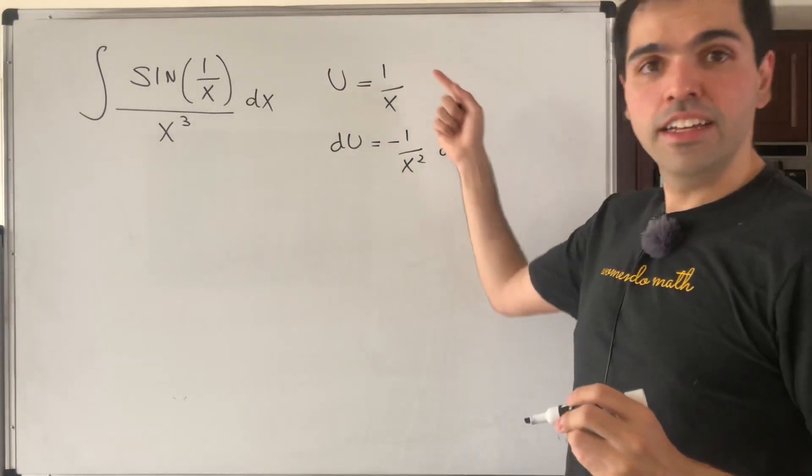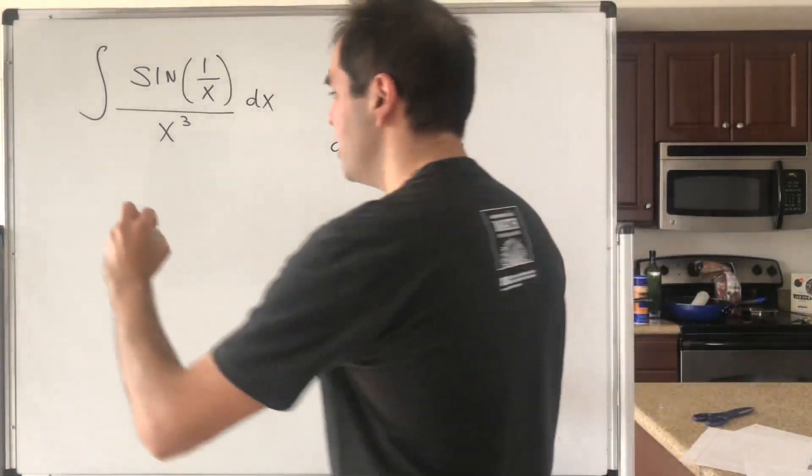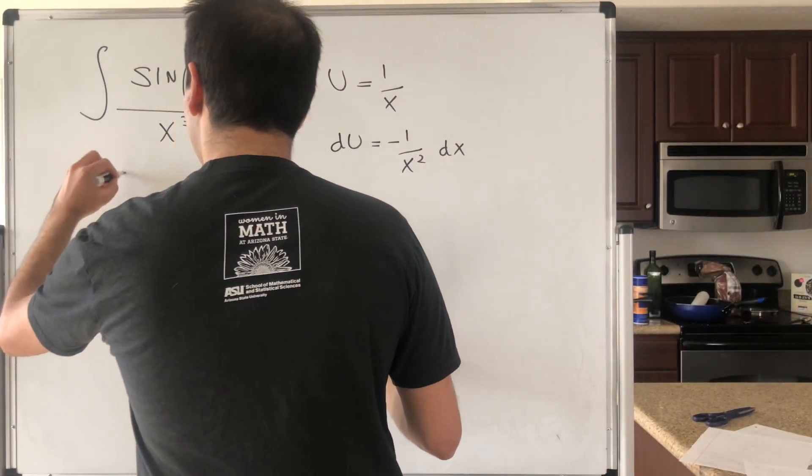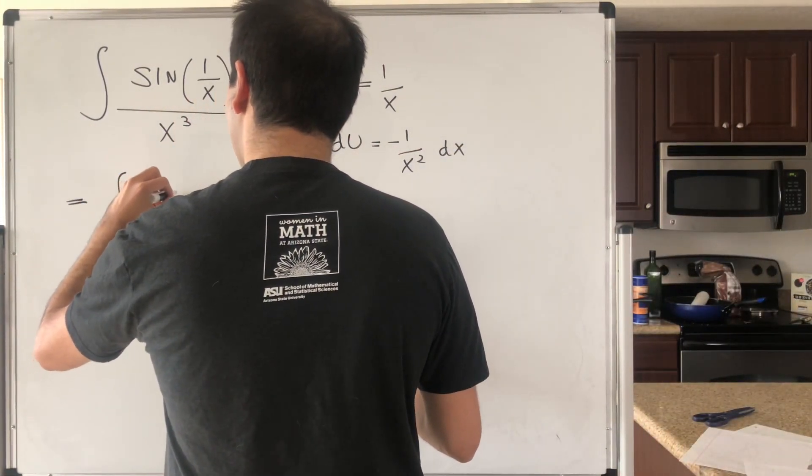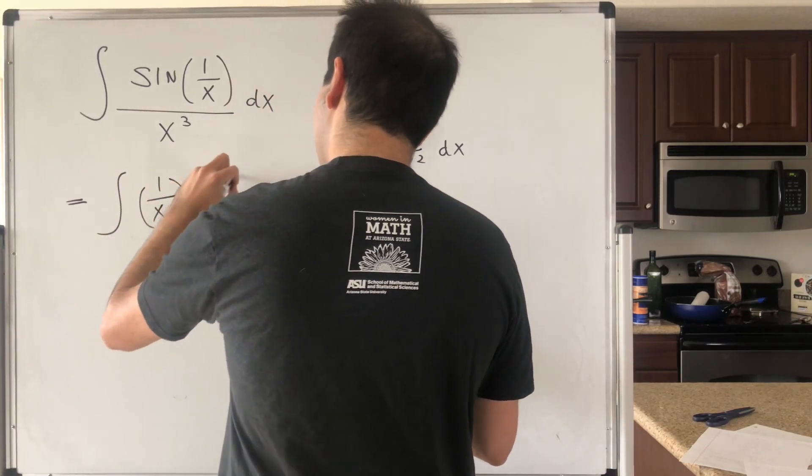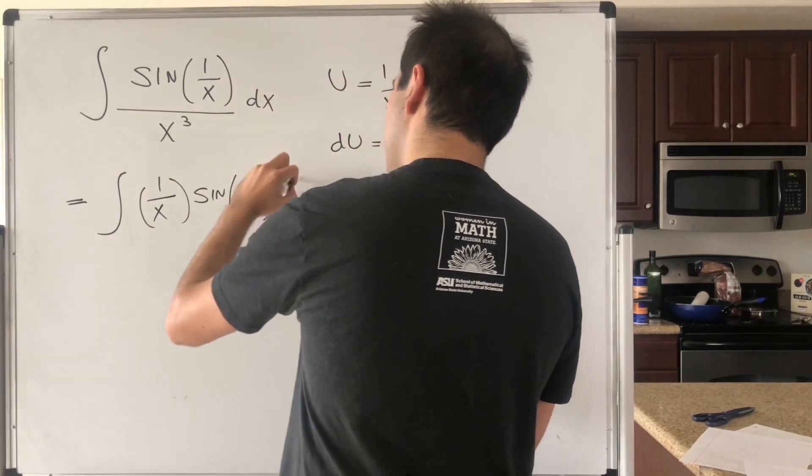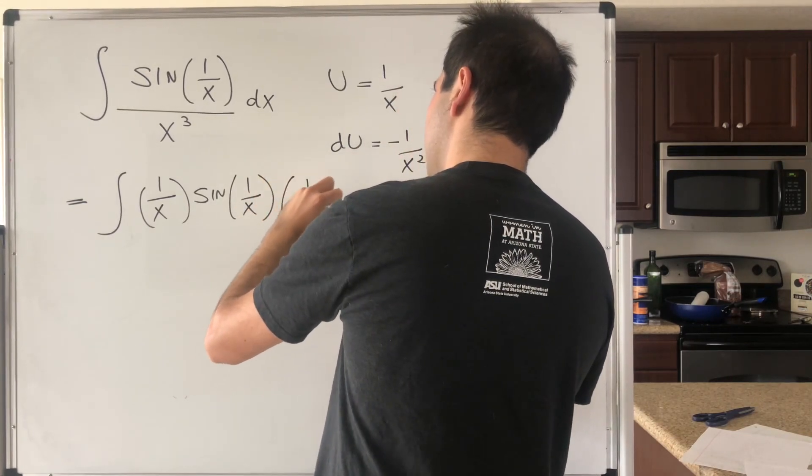And the nice thing is both of those terms appear here because this integral is none other than the integral of 1 over x sine of 1 over x times 1 over x squared dx.